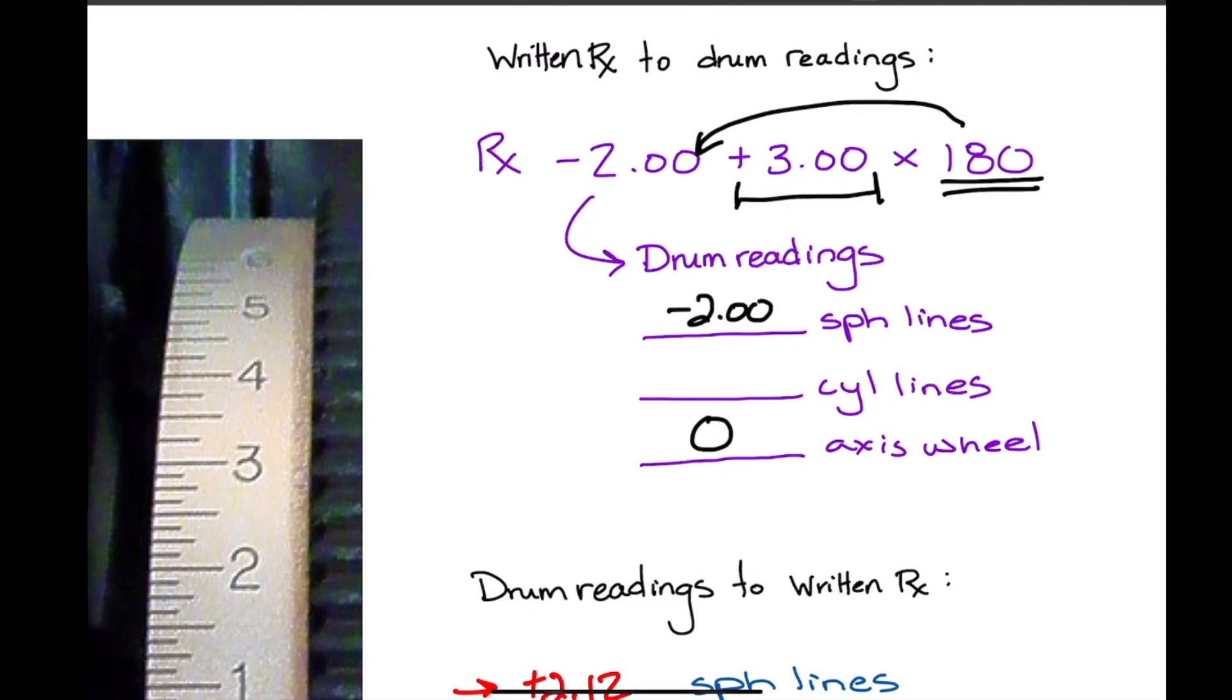And then what number am I expecting when my cylinder lines come into focus? For that, you want to add those two together because we're going to go from a minus 2 and we're going to add plus 3 to that, and we come up with plus 1.